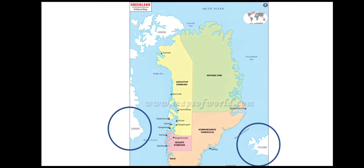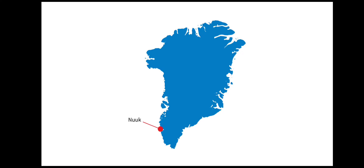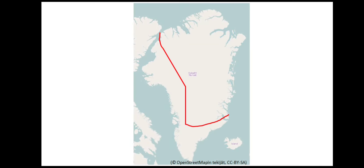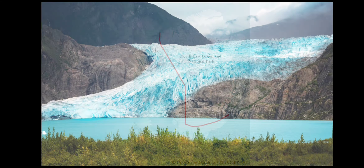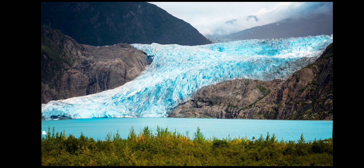Greenland also contains the world's largest national park. All towns and settlements are situated along the ice-free coast, and the population is mainly concentrated along the western coast. The north-eastern part of Greenland is not part of any municipality, but it is the site of the world's largest national park — the North East Greenland National Park. A major part of this island is under permanent ice and is located in the Arctic region, making it part of the tundra region.